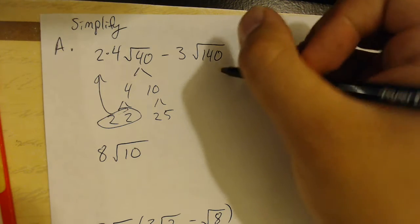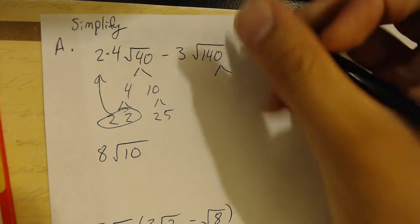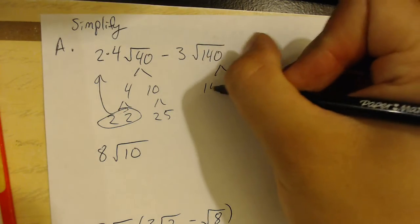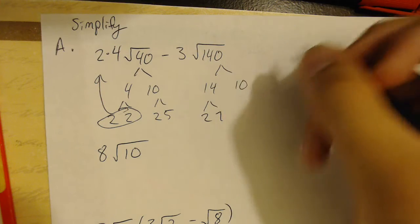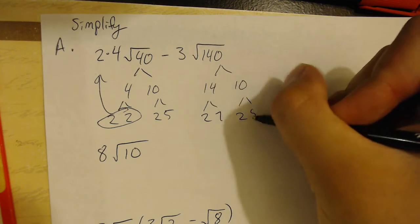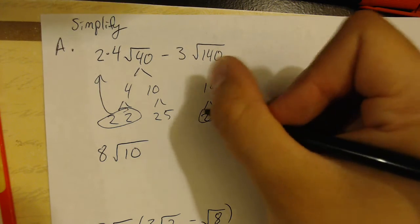Then, we go to the 140. We'll start factoring 140. Really quickly, that can be 14 and 10. From there, I've got 2 and 7. And here I've got 2 and 5. So, I've got a pair of 2s.